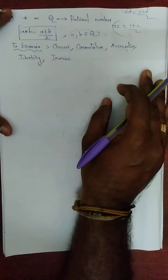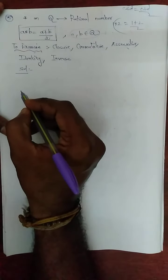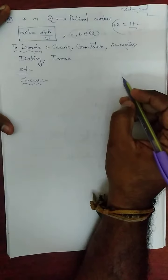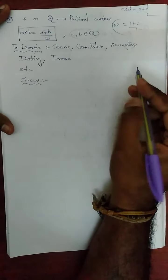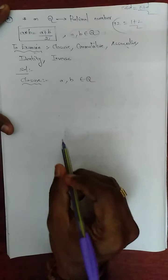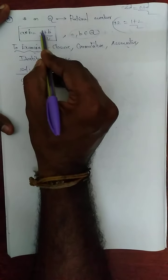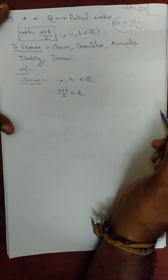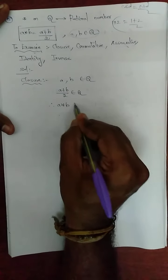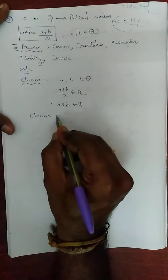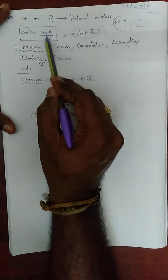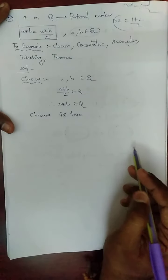First, I am going to take closure. For closure: let a and b belong to Q. We know a★b = (a+b)/2. Since a and b belong to Q, (a+b)/2 also belongs to Q. Therefore a★b also belongs to Q. Therefore closure is true.